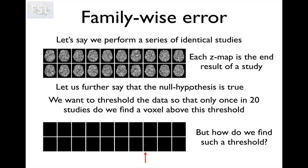If you remember, we had 20 z-maps, each the end result of a study. We know that the null hypothesis is true everywhere — there are no activations at all. What we wanted to do was find a threshold for the data so that only once in 20 studies do we find a voxel above this threshold given that the null hypothesis is true. We did find such a threshold, and this is the kind of threshold we want: only once in 20 studies do we have a false positive.